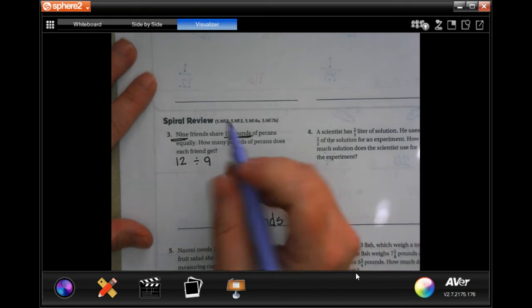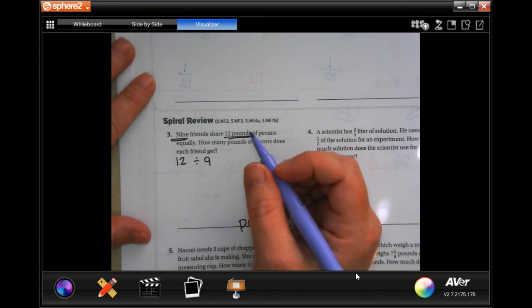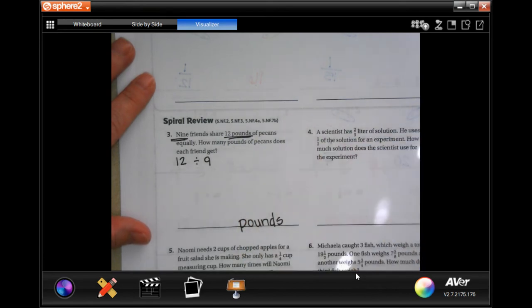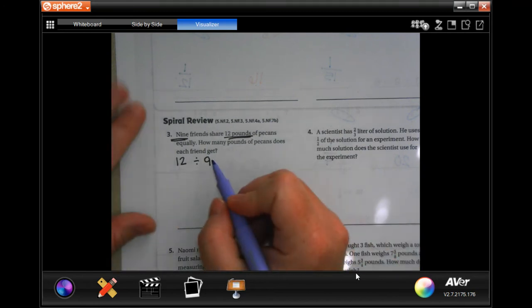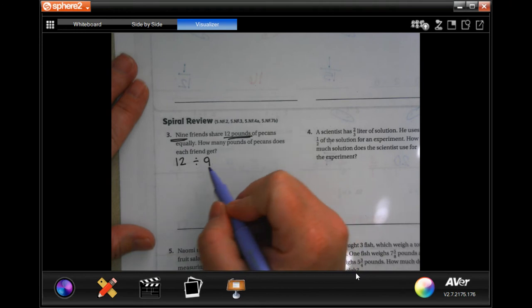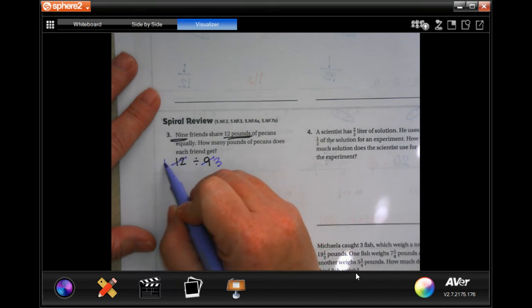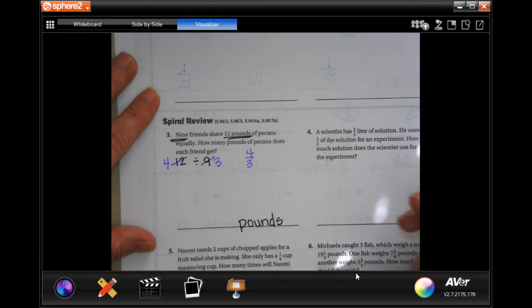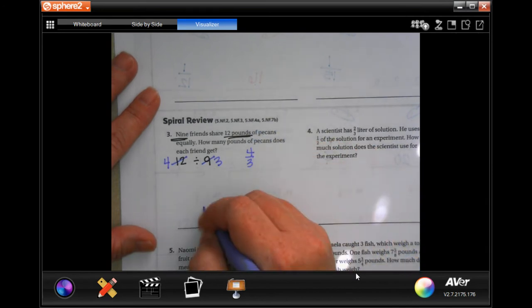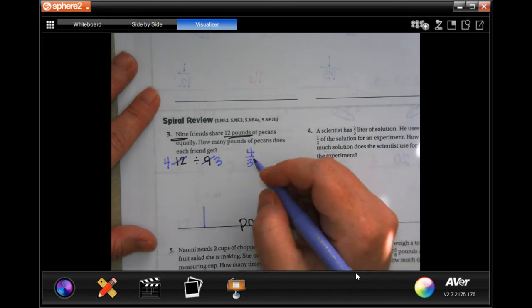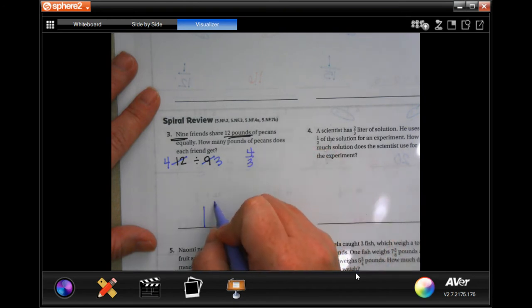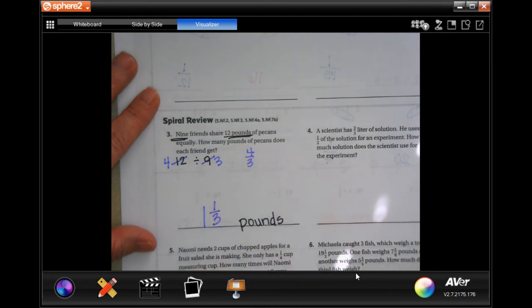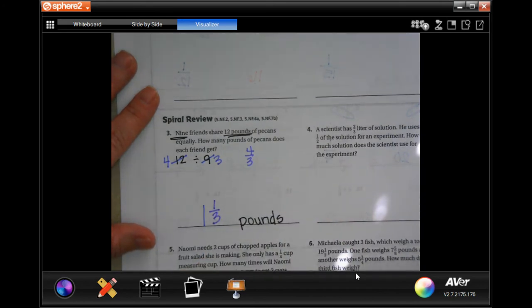So, I'm going to go ahead and reduce it first. I know that 3 goes into 9 and 3 goes into 12. So, 3 goes into 9 three times, and 3 goes into 12 four times. So now, my fraction would be 4 over 3. So, 3 goes into 4 one time. 1 times 3 is 3. So, 4 minus 3 is 1. And my denominator stays the same.